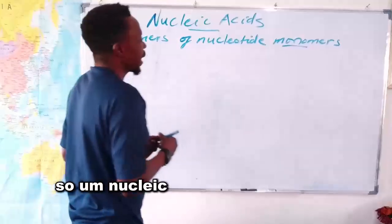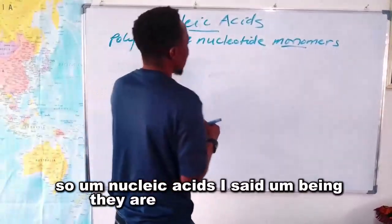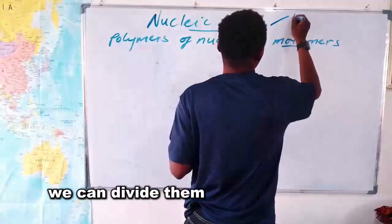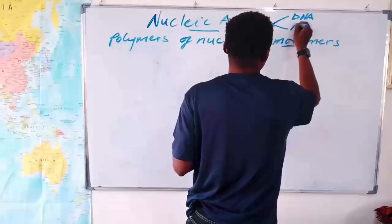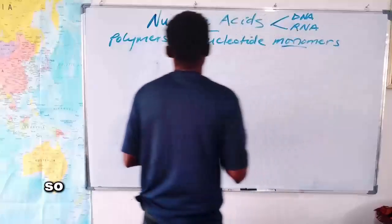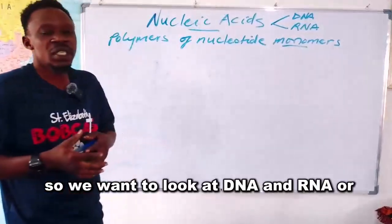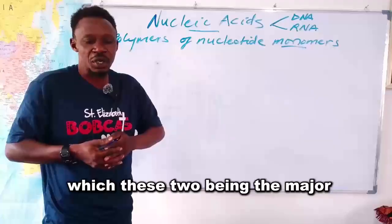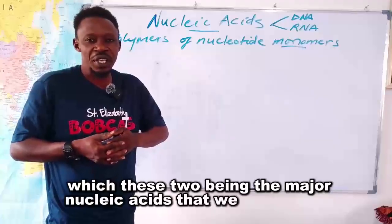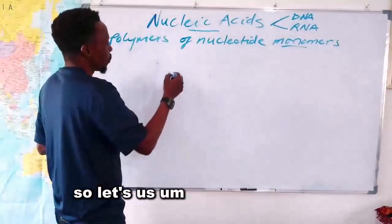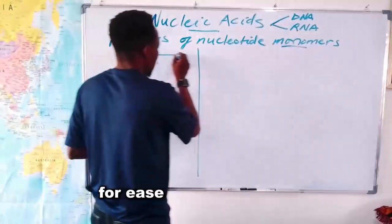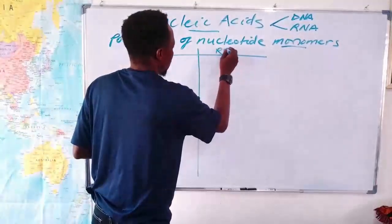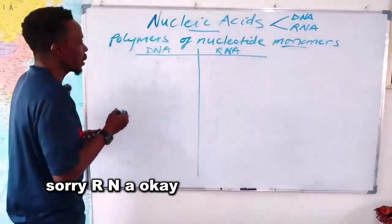Nucleic acids, being naturally occurring, are found in living cells. They can be divided into DNA and RNA, which are the two major nucleic acids. We want to look at the differences between DNA and RNA, and for ease of understanding, let us work with a table.